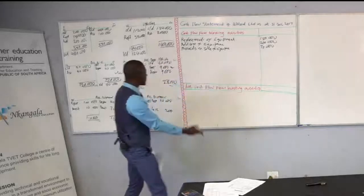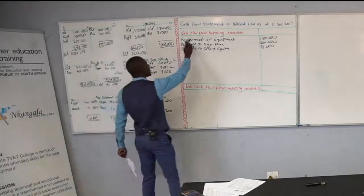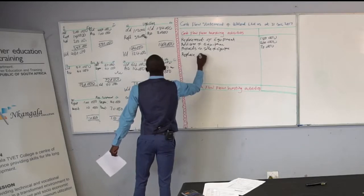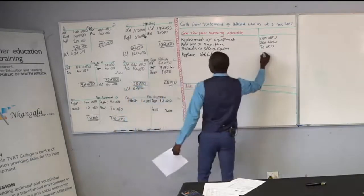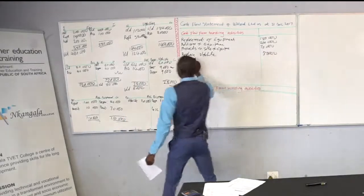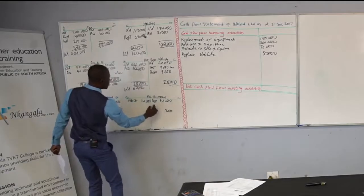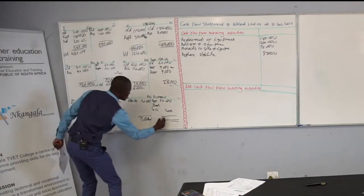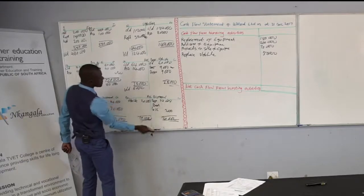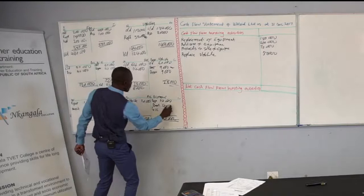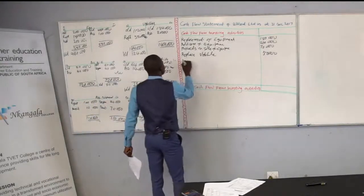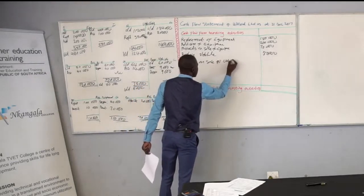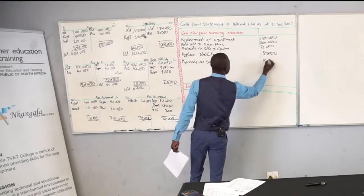So now you move to what is required — the cash flow from investing activity. I have calculated: the replacement for the vehicle. Let's calculate the proceeds on sale of the vehicle: $20,000 minus $2,000 minus $14,000 equals $4,000. So the proceeds on sale of the vehicle is $4,000.